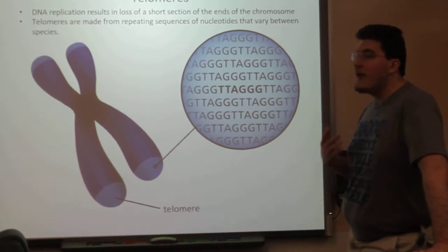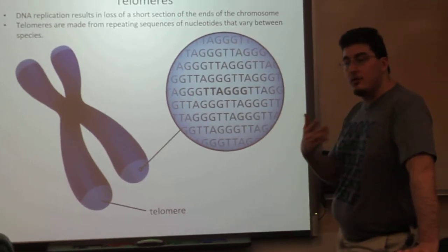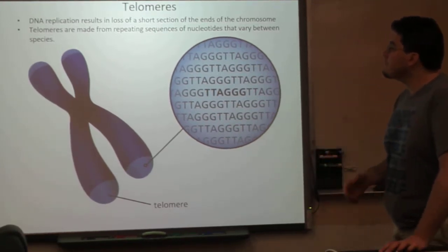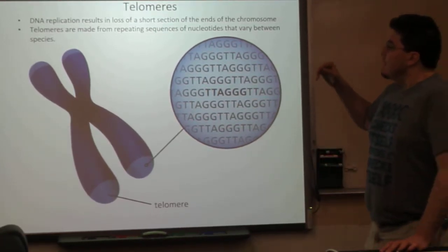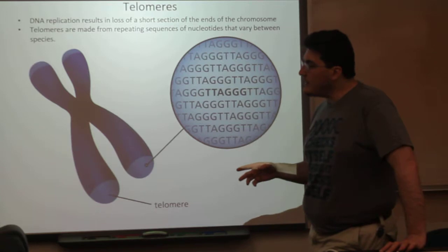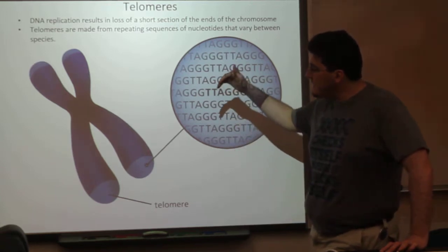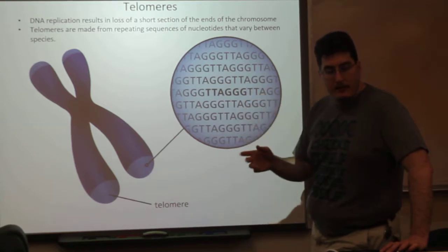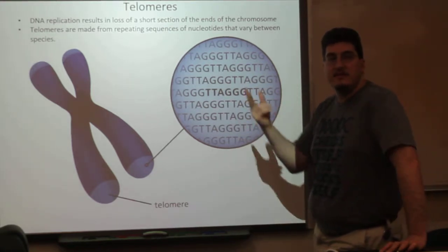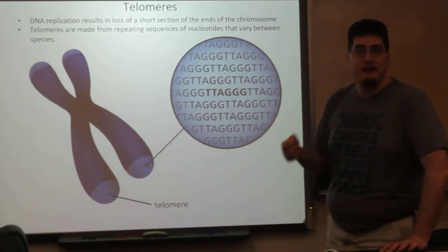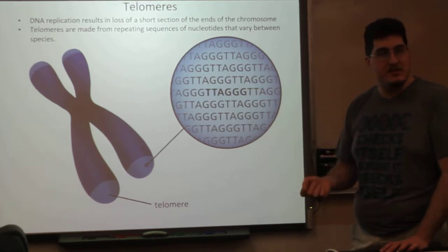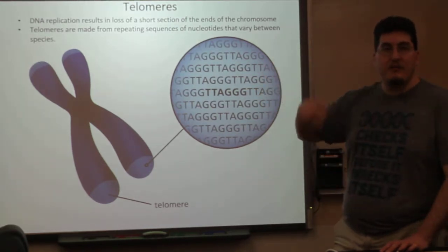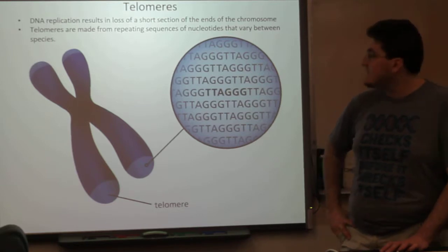We talked about telomeres as part of the chromosome in the previous video. Effectively what's going on here is this is sort of like the aglet in the tip of your shoelace. This is protecting your DNA from getting frayed and torn up at the edges — it gets snipped off so that your coding DNA doesn't have to be.